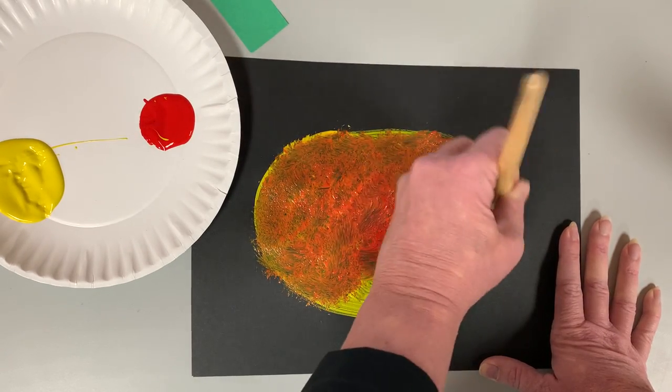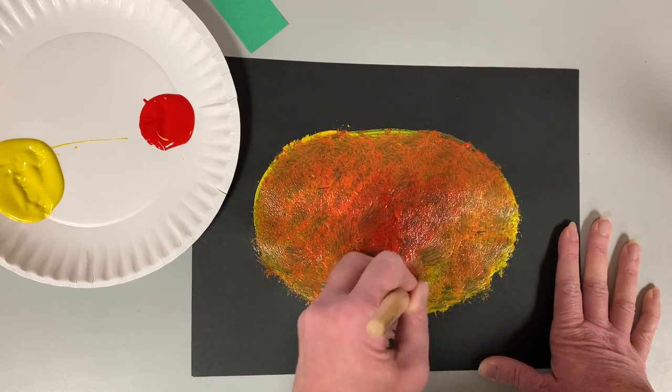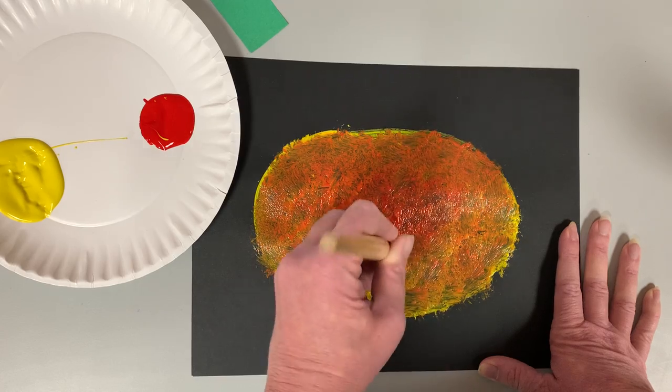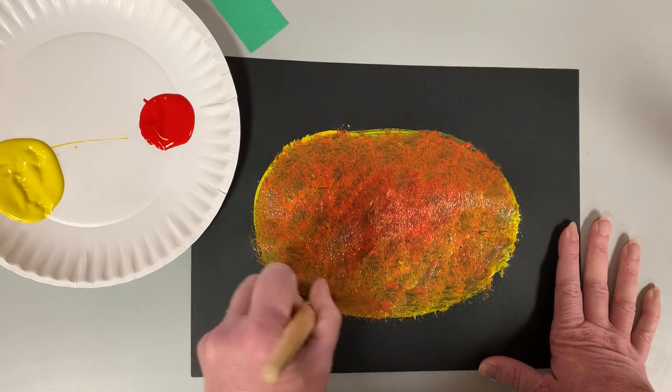Red and yellow makes orange. And most pumpkins are orange. So once we get it nice and orange then I'm gonna take the edge.